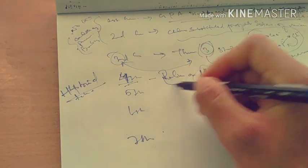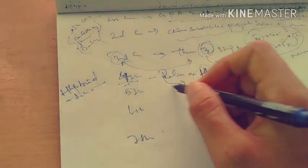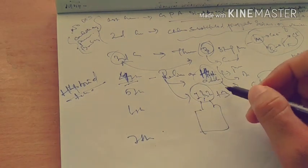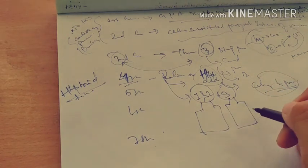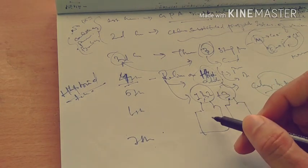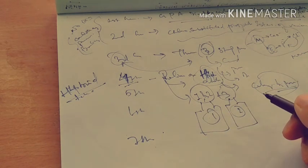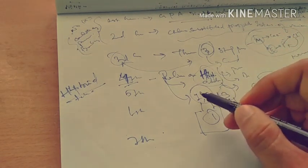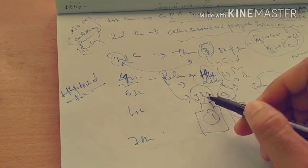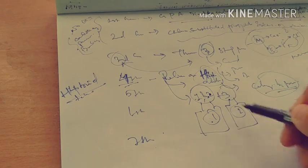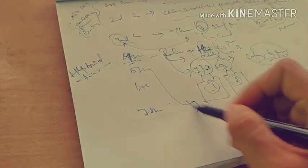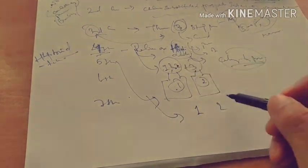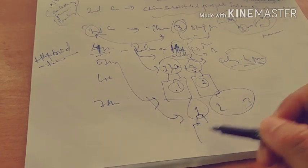In fourth generation, steps one and two — conditioning and priming — are combined into one bottle, while step three — bonding agent — remains in a separate bottle. So fourth generation uses two bottles. In fifth generation, the arrangement is reversed: step one — conditioning — remains alone in its own bottle, while steps two and three — priming and bonding — are combined into a single bottle. So fifth generation also uses two bottles, but with different components combined.